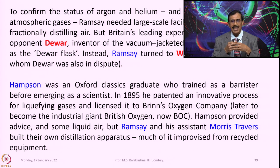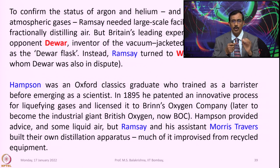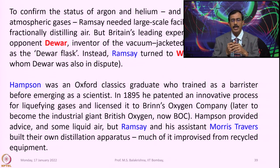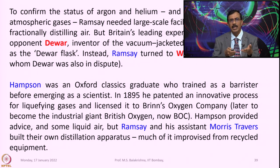Hampson was an Oxford classics graduate who trained as a barrister before emerging as a scientist. In 1895 he patented an innovative process for liquefying gases and licensed it to Brin's Oxygen Company, later to become the industrial giant British Oxygen — now called BOC. Hampson provided advice and some liquid air, but Ramsey and his assistant Maurice Travers built their own distillation apparatus, much of it improvised from recycled equipment.